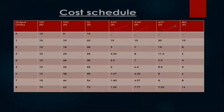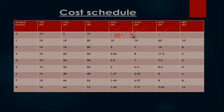Let us make you aware about the formula for calculating this. AFC is calculated as AFC = TFC divided by quantity Q. It means that TFC को आप divide कर दो units of output, so AFC मिल जाएगा। इसी तरह से AVC = TVC upon Q.